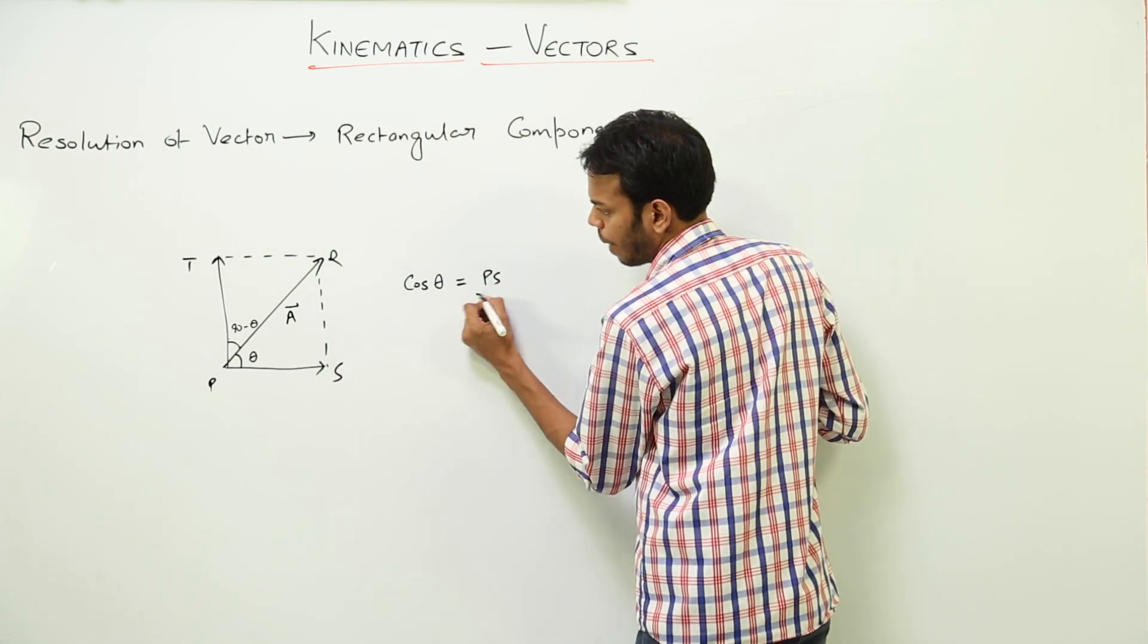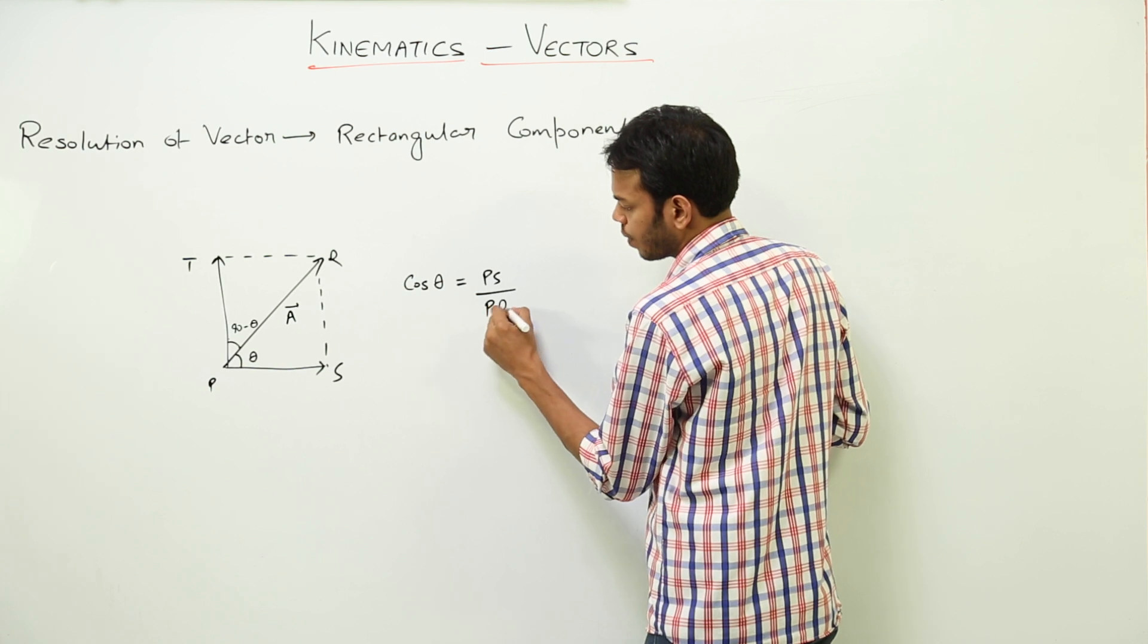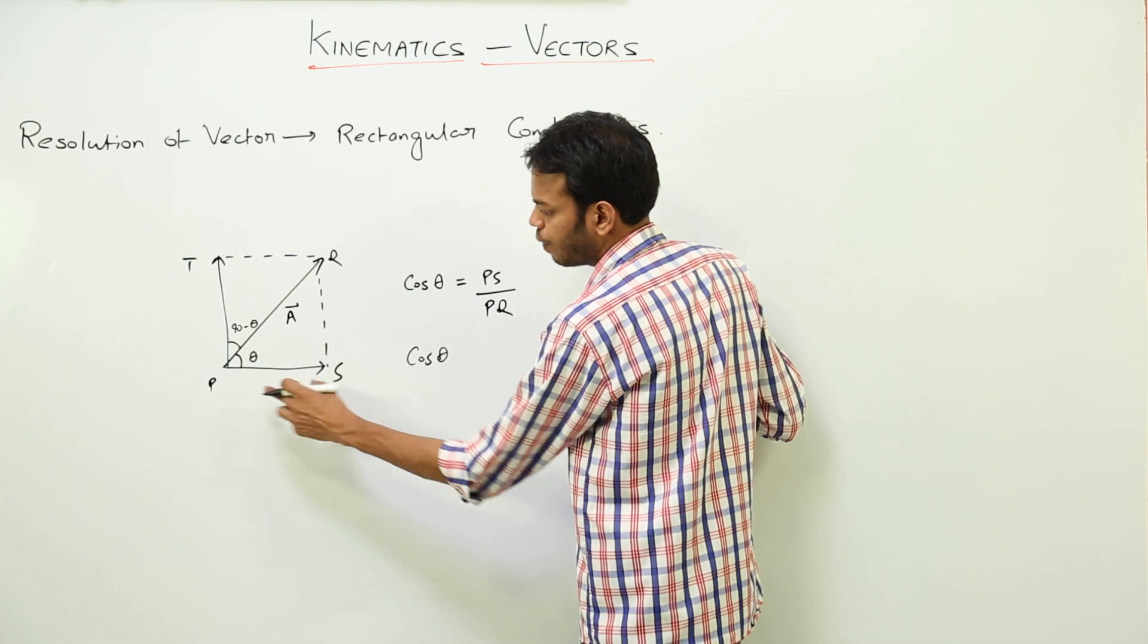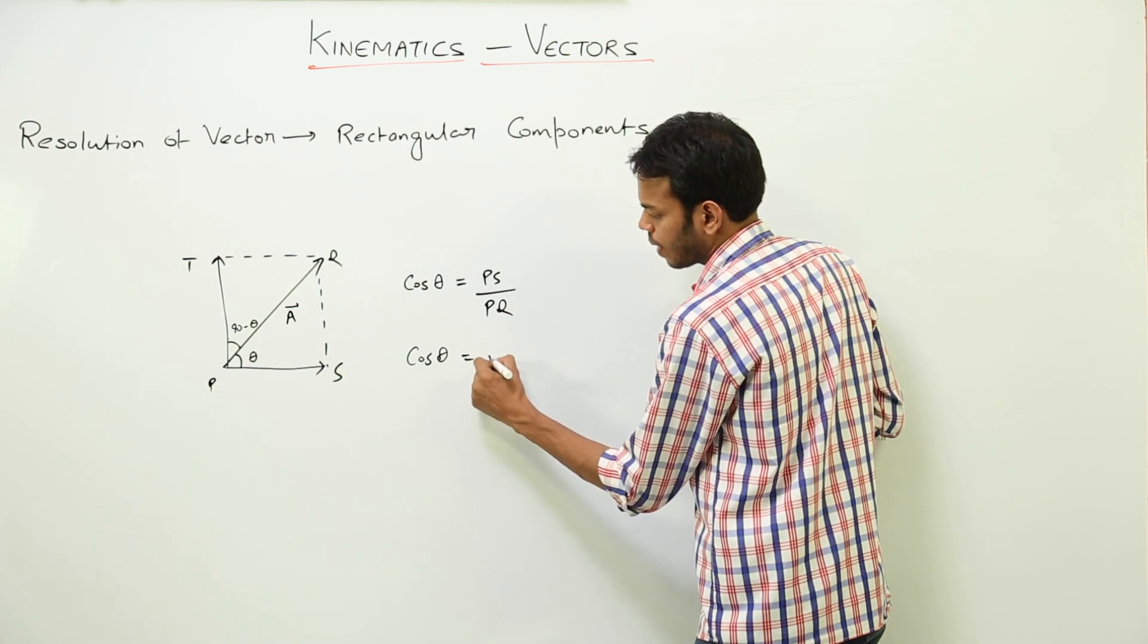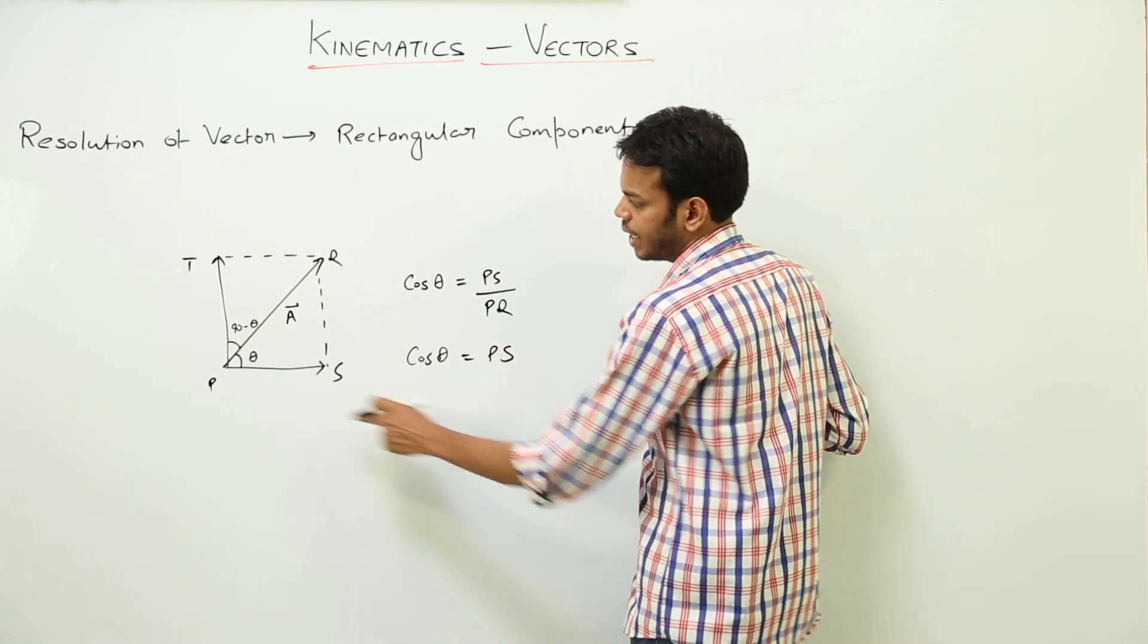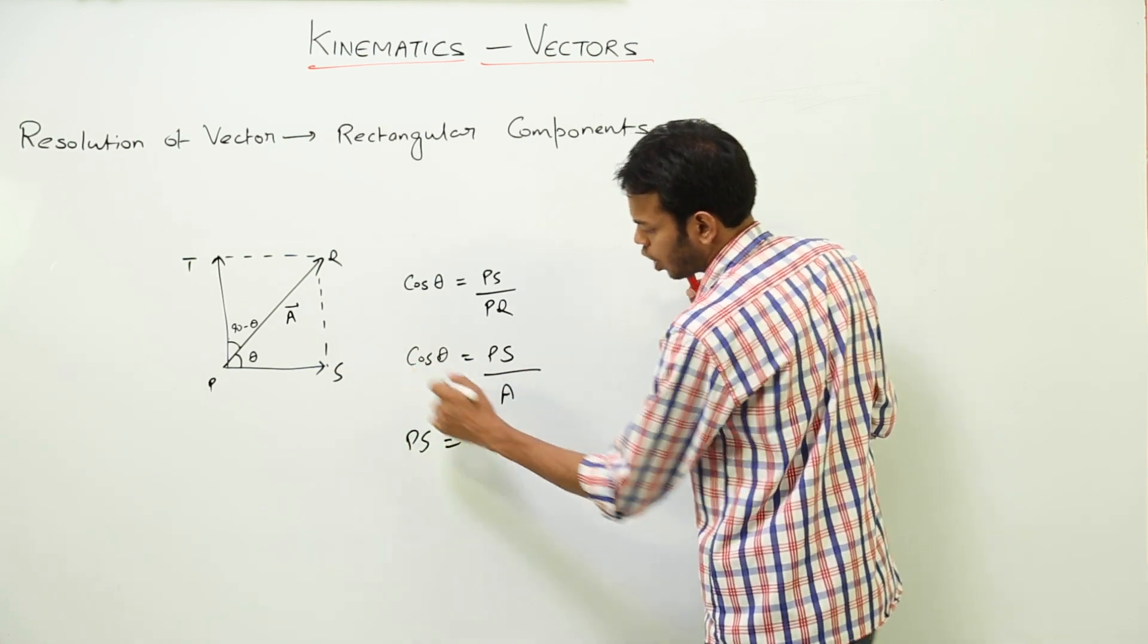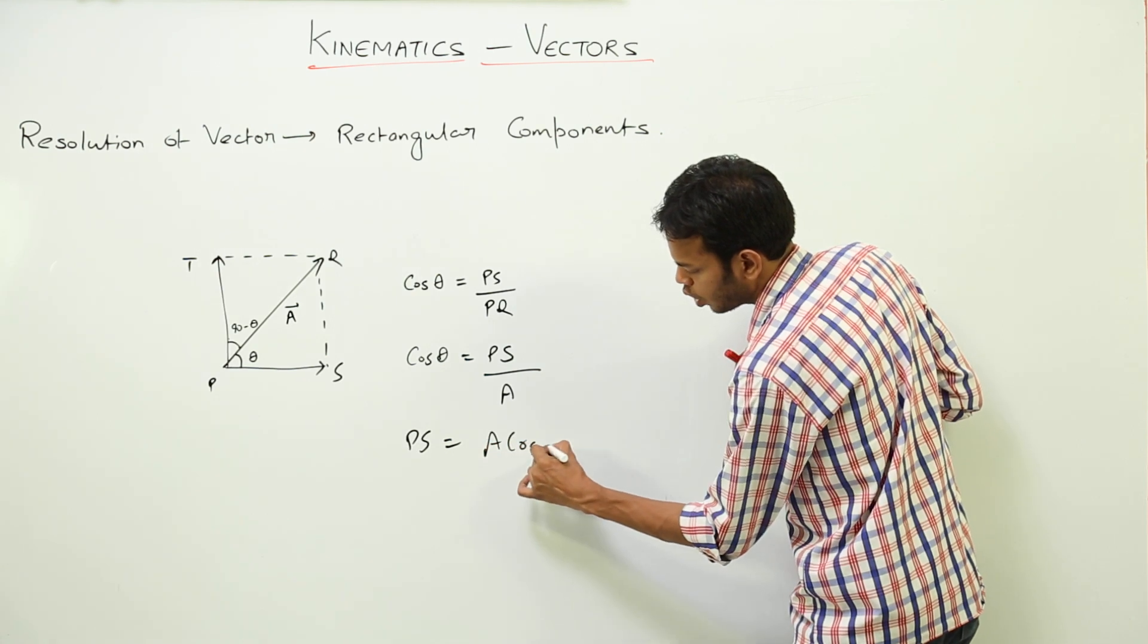Or cos theta is PS, which is this vector which we want to name, and PQ is the magnitude of vector A. So PS becomes, cross multiply, A cos of theta. So this vector is A cos theta.